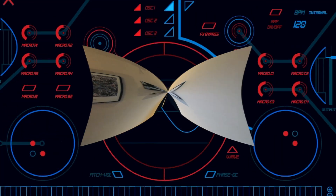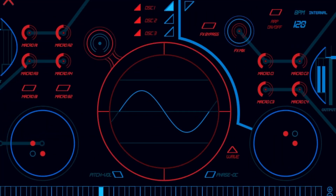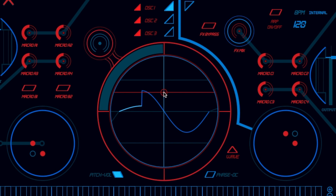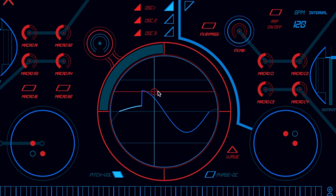A bit more about wave slicing synthesis. Let's start with a simple sine wave. In wave slicing, we chop the waveform into separate segments, and then we alter the segments, such as pitch and volume.